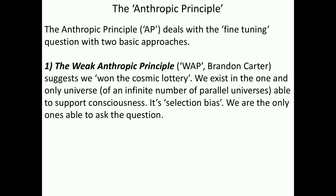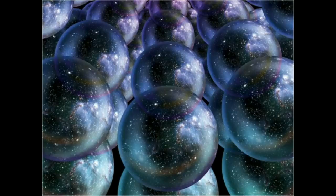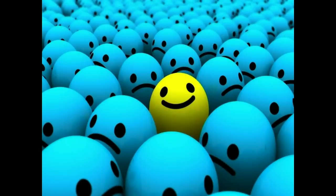This is the anthropic principle question, and there's two types of answers. The weak anthropic principle suggests we won the cosmic lottery. We exist in the one and only universe of an infinite number of parallel universes able to support consciousness. Selection bias, we are the only ones able to ask the question. So there's the multiple worlds, and only one of them supports consciousness. We won the lottery.